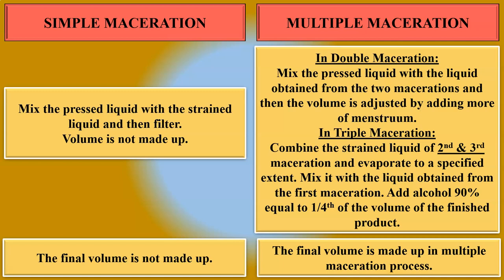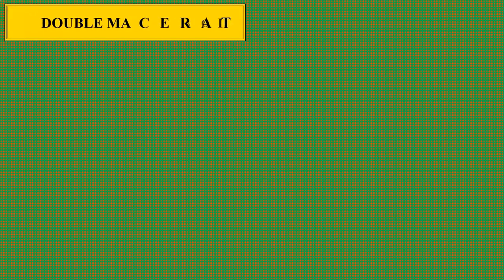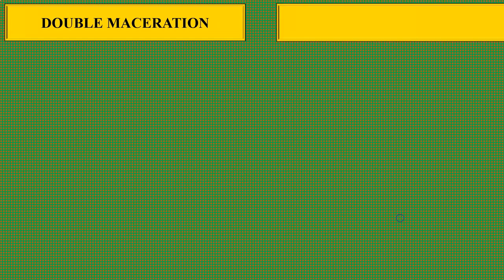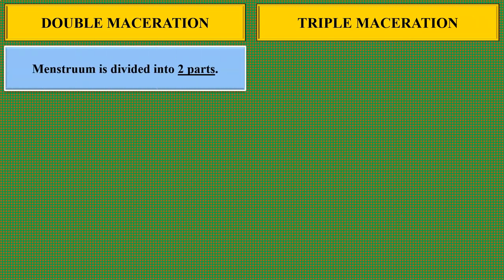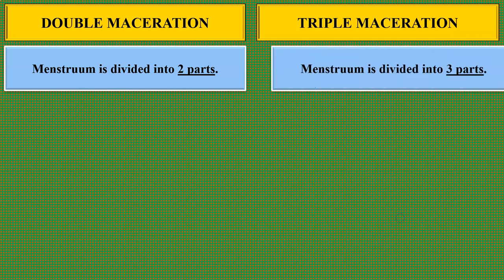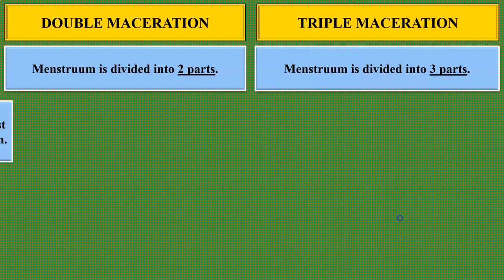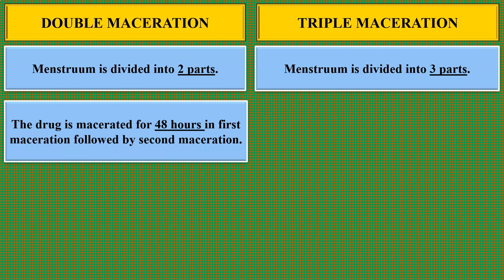This was the difference between simple maceration and multiple maceration. Next is the difference between double maceration and triple maceration. In double maceration, the menstruum is divided into two parts, whereas in triple maceration, the menstruum is divided into three parts.